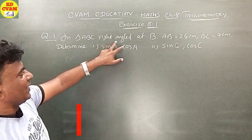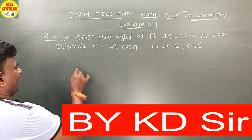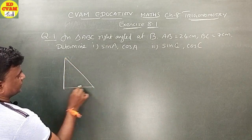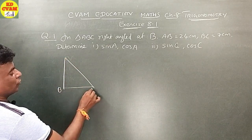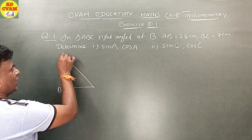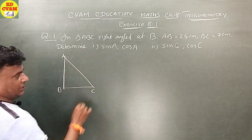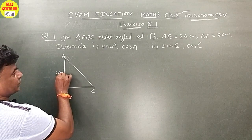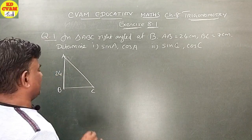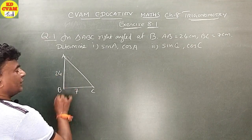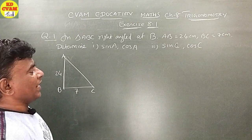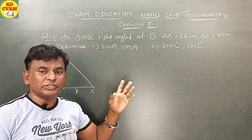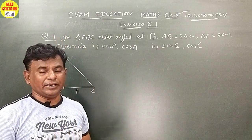In triangle ABC, right-angled at B. AB is equal to 24 and BC is equal to 7. Determine sin A and cos A. In this chapter, the whole chapter is based on right-angled triangle.